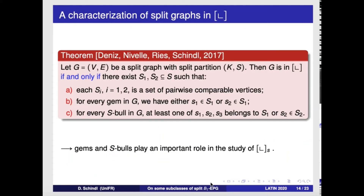Back in 2017, based on that representation, we obtained a necessary and sufficient condition for a split graph to be L-shaped. Basically, you can find two subsets S1 and S2 of the stable part verifying three conditions: each Si must be composed of pairwise comparable vertices with nested neighborhoods; and the other conditions reflect the constraints from s-bulls and gems. This is a characterization but not in terms of forbidden induced subgraphs. It shows that gems and s-bulls play a central role.